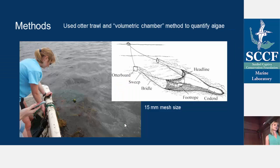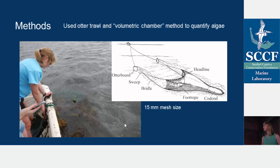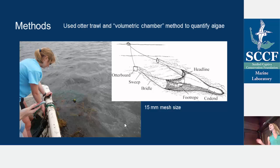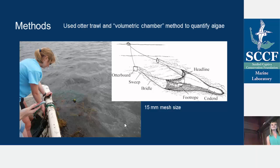We used an otter trawl and a newly constructed volumetric chamber method to quantify algae. We towed this otter trawl behind a boat — this is standard gear used for fish trawling, with a 15-millimeter mesh. It's called an otter trawl because of the otter boards on either side that keep the net upright. You've got floats on the top of the mouth and chain on the bottom. The goal is to sweep along the bottom and get everything into your net — that includes fish and whatever algae is in the area. We would tow behind our boat for 30 seconds and pull everything in. Sometimes we had an entire net full of algae, so it could take a few hours to get it all in the boat.